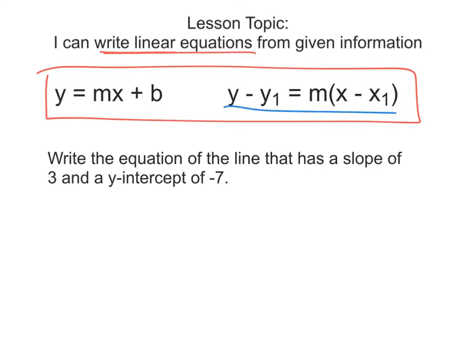Even more so will be point-slope form versus slope-intercept form. This is slope-intercept form — we have our slope and our y-intercept. And this over here is point-slope form — we've got our point from x1, y1, and we've got our slope from m. So we're going to use these two forms to write our equations, and mainly point-slope.